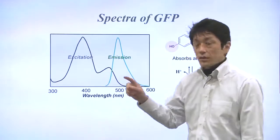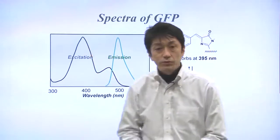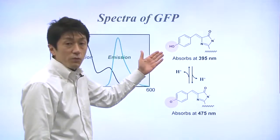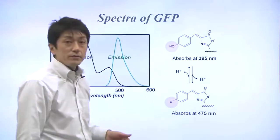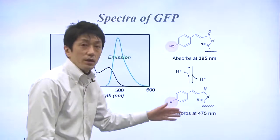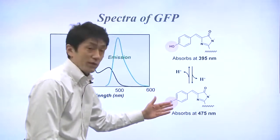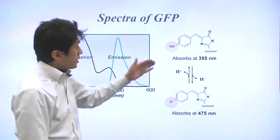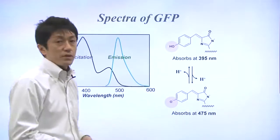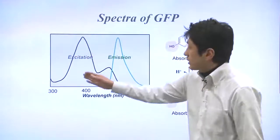The peak at 395 nanometers comes from the protonated form of the GFP chromophore. On the other hand, the peak at 475 nanometers originates from the deprotonated or ionized form. So these two forms are mutually exchanging in equilibrium. That's why GFP has two excitation peaks.